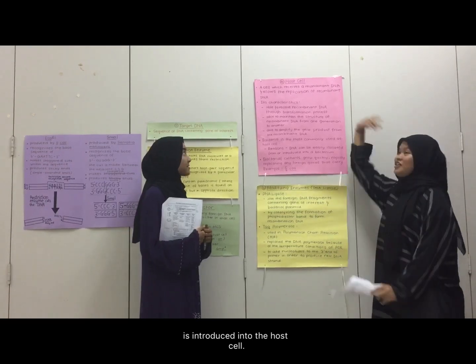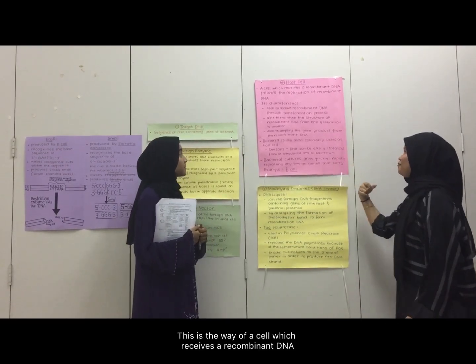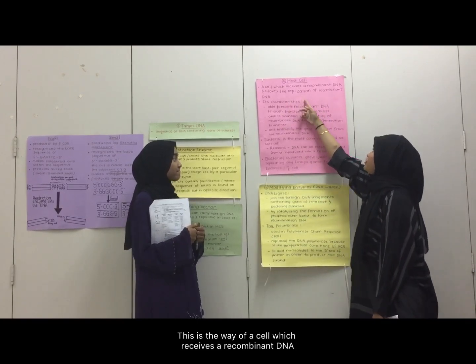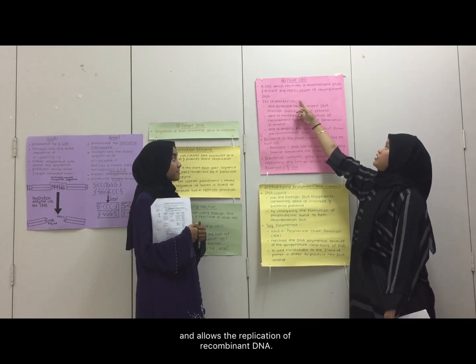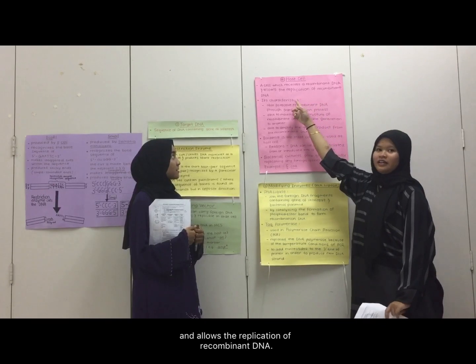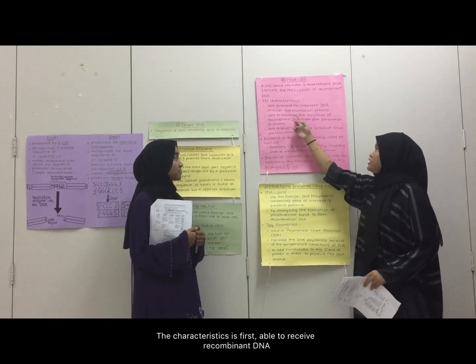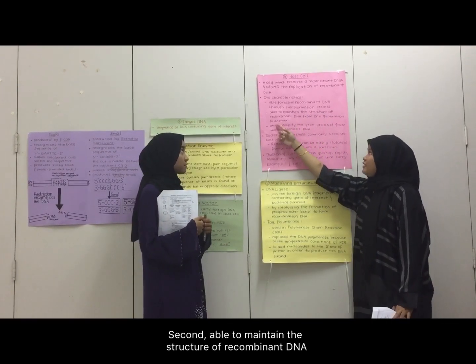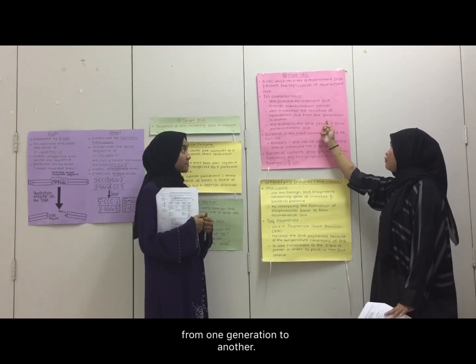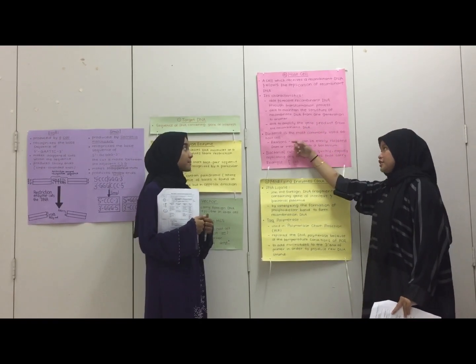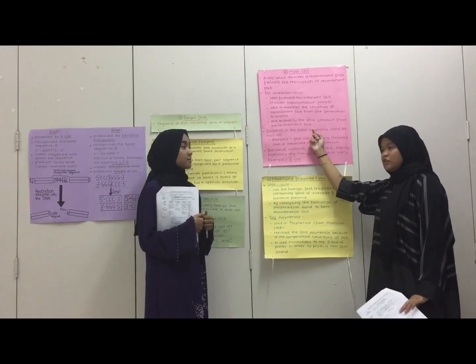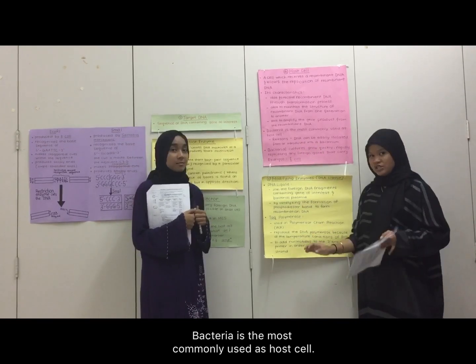In order to replicate, the DNA vector carrying the foreign gene is introduced into the host cell. A host cell is a cell which receives recombinant DNA and allows the replication of recombinant DNA. The first characteristic is being able to receive recombinant DNA through the transformation process, and second, able to maintain the structure of recombinant DNA from one generation to another. Bacteria is the most commonly used host cell.